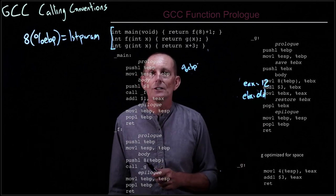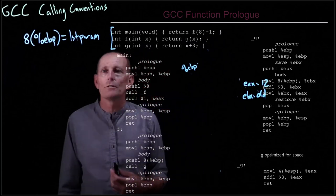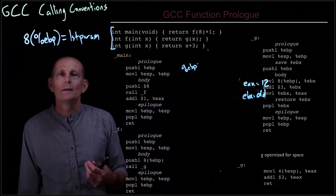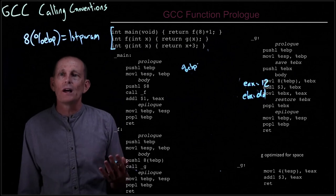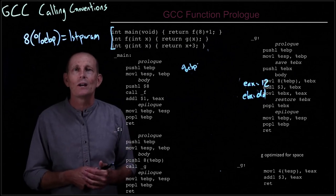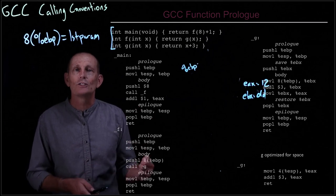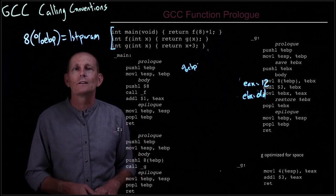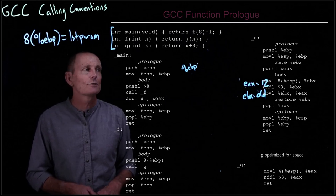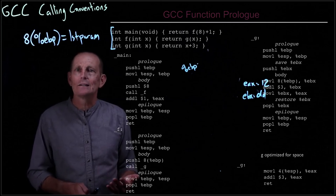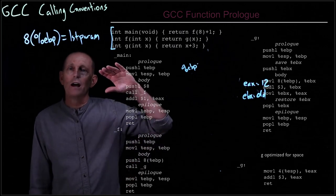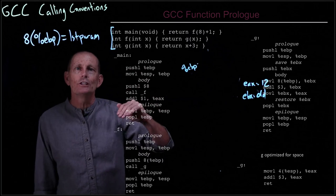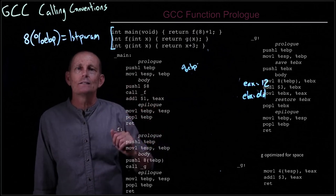Main functions in C can have a return result, which becomes the result of the process. The process finishes when we leave main, and processes on Unix have a status which is an integer — that's going to be 12 here. We'll look at that as we get into the shell and look at status codes. So that gives us an example of how the stack is used for main, f, and g.